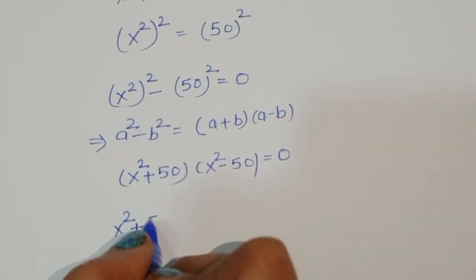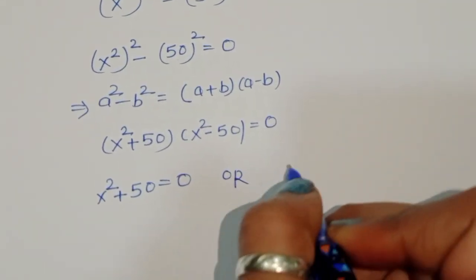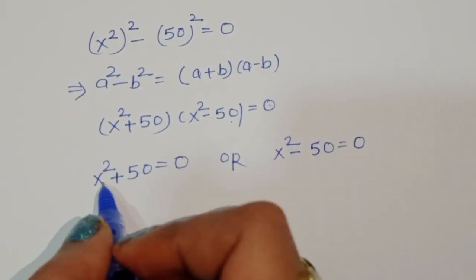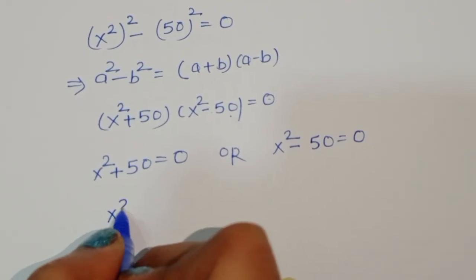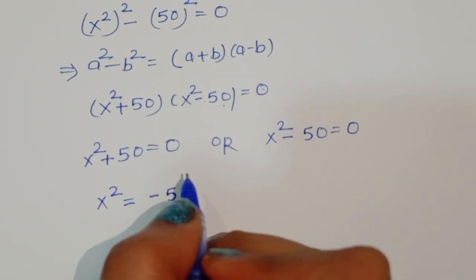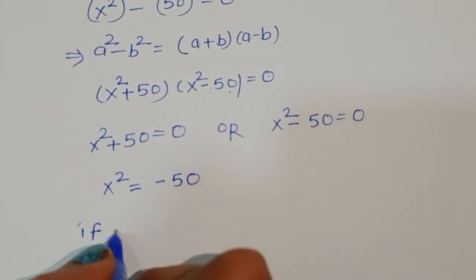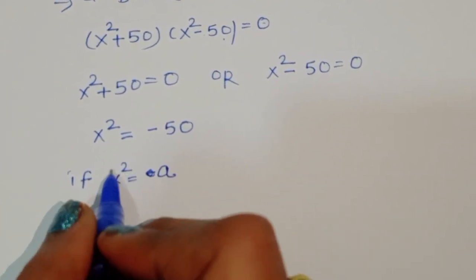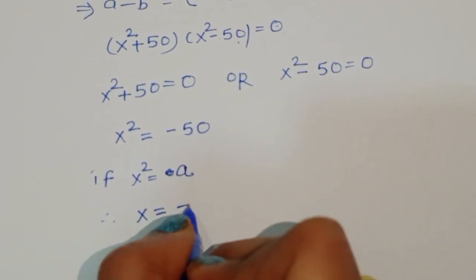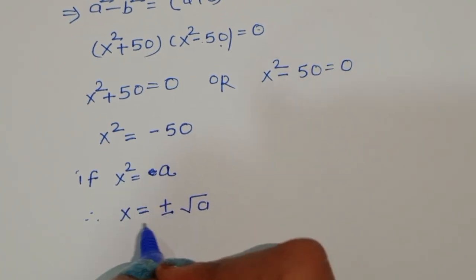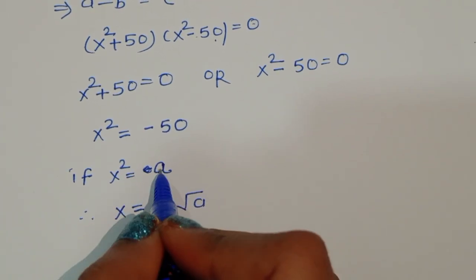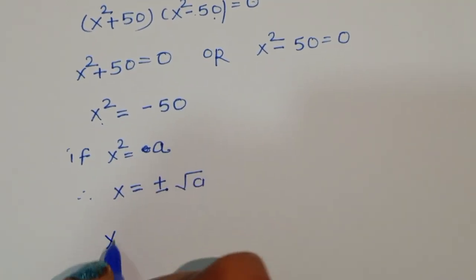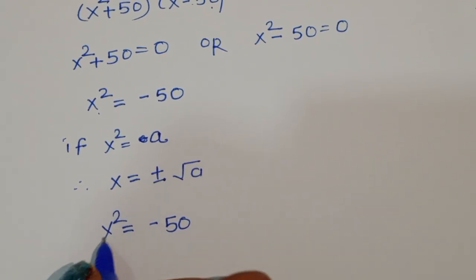We now have two equations. The first one is x squared plus 50 equals 0, which gives us x squared equals negative 50. Taking square roots of both sides, x equals plus or minus the square root of negative 50.